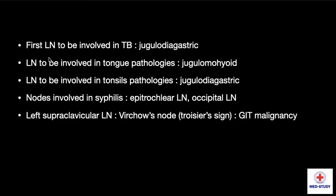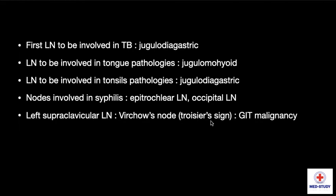Now coming to some important facts and terminologies: the first lymph node to be involved in TB is the jugulodigastric lymph node. The lymph node involved in tongue pathologies is the jugulo-omohyoid lymph node. The lymph node involved in tonsil pathologies is the jugulodigastric lymph node. Nodes involved in syphilis are the epitrochlear lymph node and the occipital lymph node. Left supraclavicular lymph node enlargement, also known as Virchow's node or Trossier's sign, is seen with GIT malignancy.